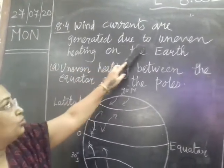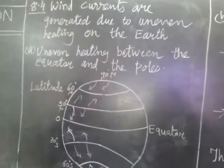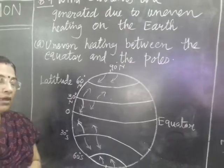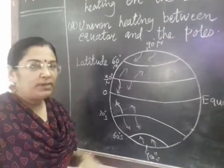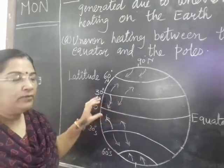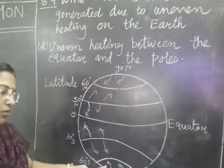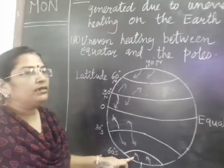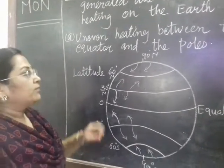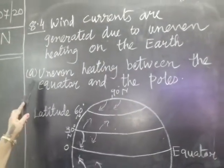Wind currents are generated due to uneven heating on the earth. We know that when on the earth, temperature is not same in all the places. For example, near to the equator the temperature is high, whereas near to the North Pole and South Pole the temperature is low. But how it generates? Two types of wind currents are generated.